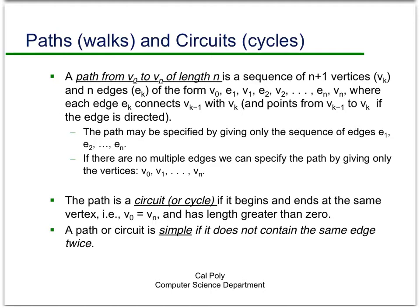A path is a circuit or a cycle if it begins and ends at the same vertex. That makes sense—circles is similar to circuit and cycle. In terms of our basic definition, the initial vertex has to be the final vertex, so V sub 0 has to equal V sub n. Typically, we don't want circuits or cycles that are empty, so it has to have length greater than zero. An important restriction: simple paths or simple circuits do not contain the same edge twice.